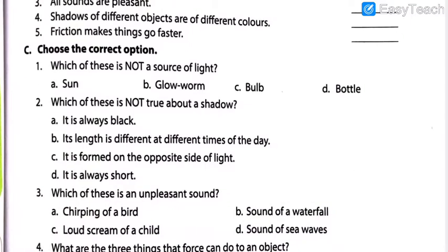Now it's time to solve Choose the Correct Option. Please give the heading: Question C — Choose the Correct Options. In this section you don't have to write the question or the options, just write the answer number and answer. Question one: Which of these is not a source of light? Options: sun, glowworm, bulb, or bottle. Which of these objects does not give out light?